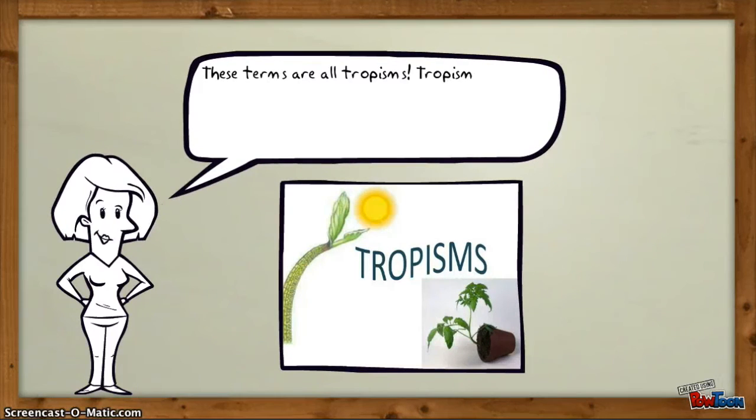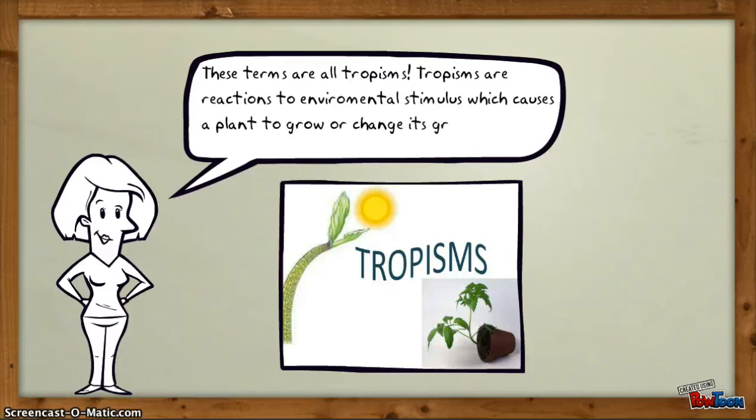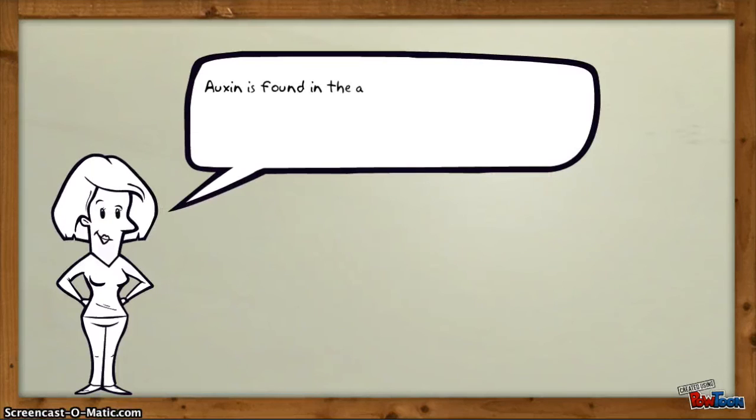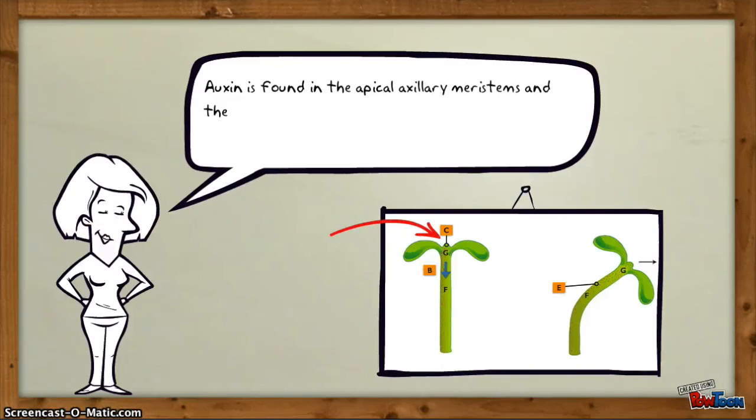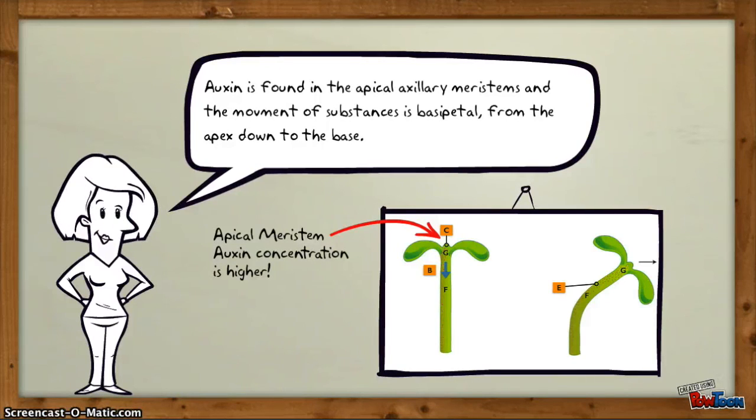These terms are all tropisms. Tropisms are reactions to environmental stimulus which cause the plant to grow or change its growth movement. Auxin is found in the apical axillary meristems and the movement of substances is basipetal, from the apex down to the base. Apical meristem, auxin concentration is higher.